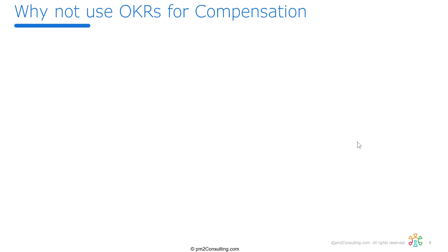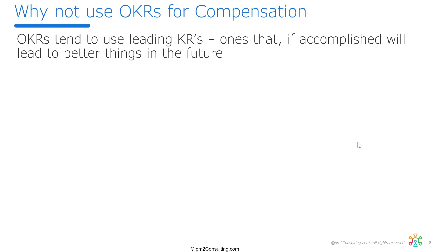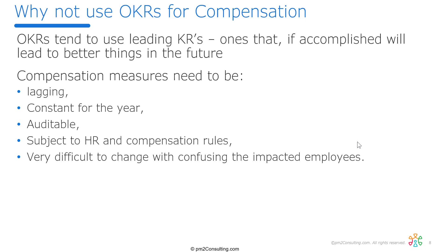The other thing we need to talk about is compensation models in particular. The issue is OKRs tend to be leading indicators — I'm looking for predictors of future performance so I can hit those tripwires, coach, and navigate the business better. Whereas compensation measures tend to be lagging; they need to be consistent and constant for the year, auditable, and subject to HR compensation rules. They're usually difficult to change without confusing employees. So for those reasons, it's a bit of a drag on the OKR system if you're trying to link it to the comp model — and that's why we have those three bands. That solves that problem.